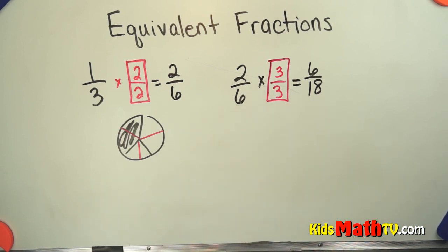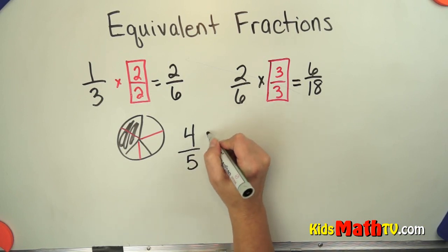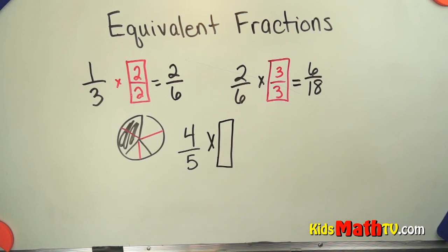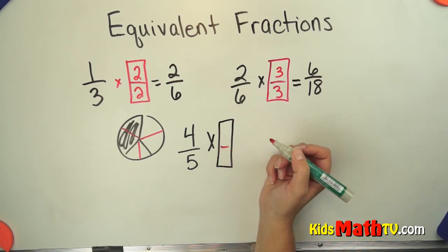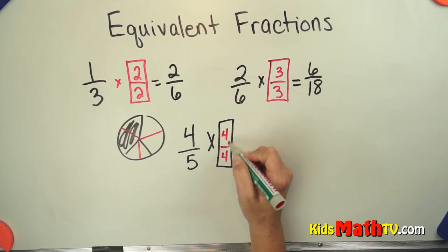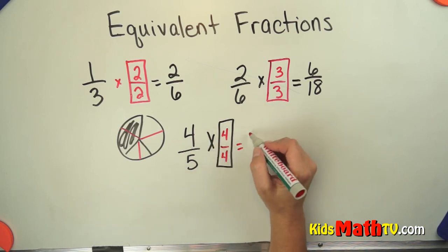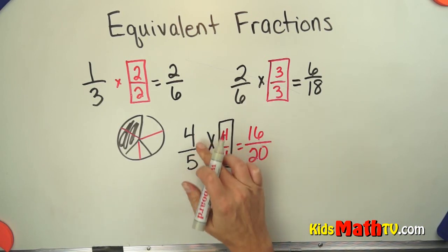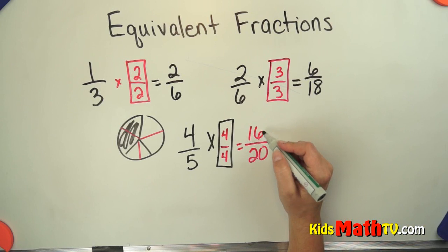Let's do another example. Let's try something like 4 fifths. If I want to rename 4 fifths I can simply multiply by 1. I can choose any number I want. 4 over 4 is 1. Because 4 out of 4 is 1. 4 fifths times 4 over 4 is 16 over 20. So 4 fifths and 16 twentieths is the same amount written in a different format.